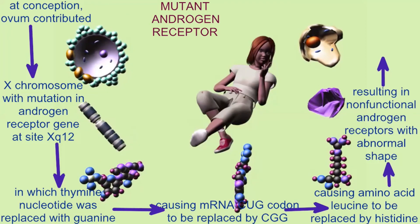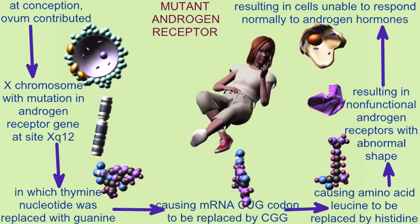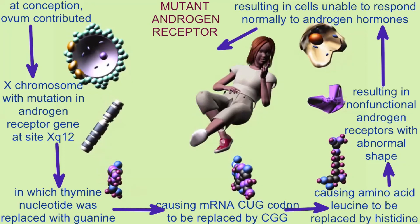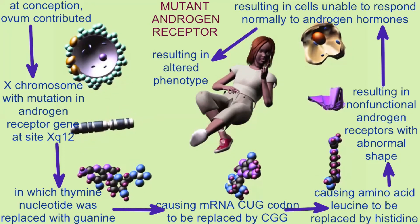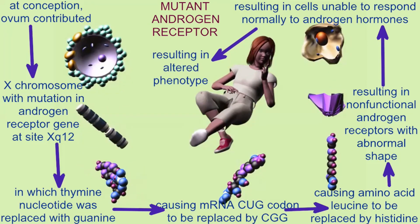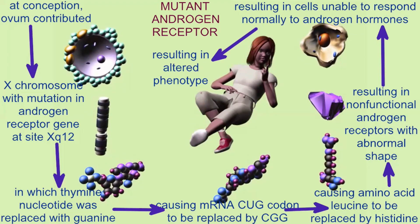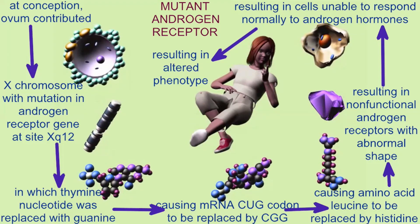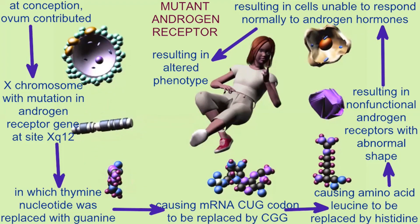Androgens are used in diverse tissues in addition to the reproductive system. For example, androgen receptor mutations can cause a form of muscular atrophy in which motor neurons degenerate, resulting in cramps and weakness.